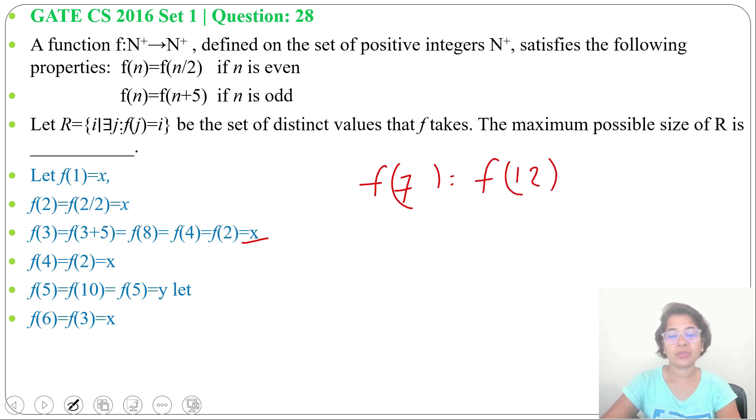f(12). And 12 is an even number, so it will be f(6). Now 6 is an even number, so it will be f(3), and f(3) we already found is x.